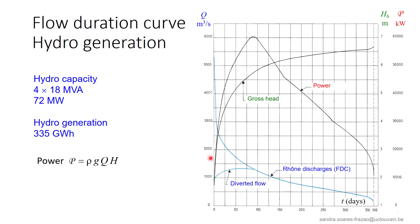This site is equipped with four turbines, having a 72 MW capacity, for a discharge of about 400 m³ per second each. So the maximum possible discharge through the power plant is about 1,200 m³ per second, as can be seen here. This is the maximum value of the diverted flow.